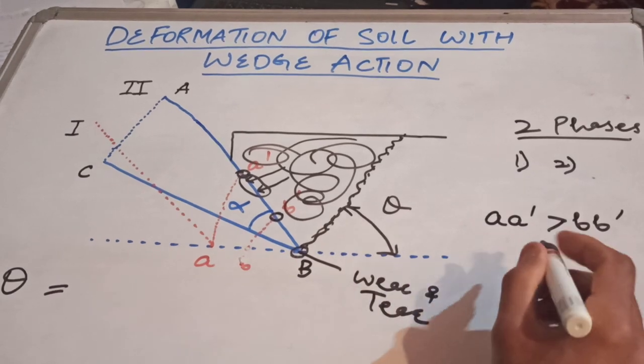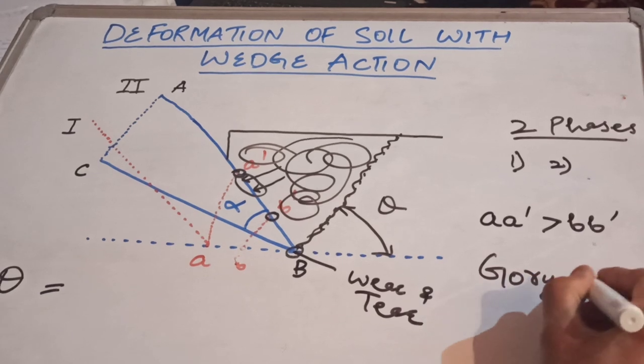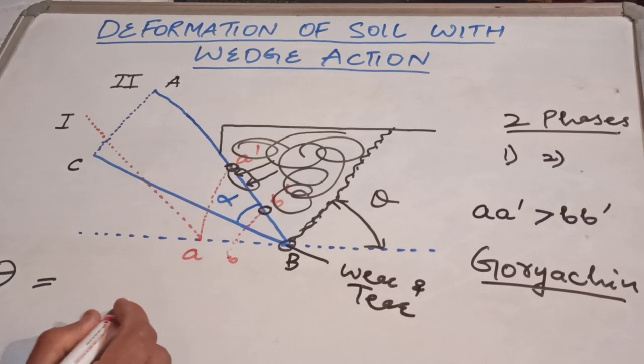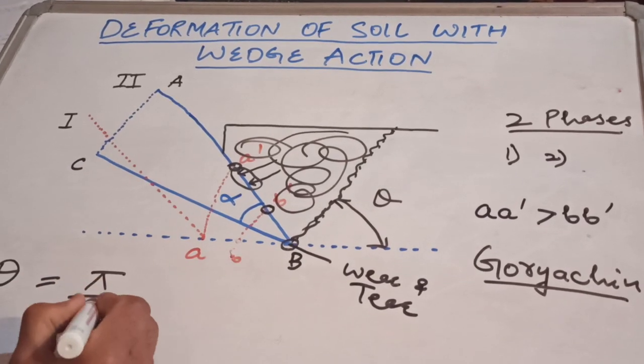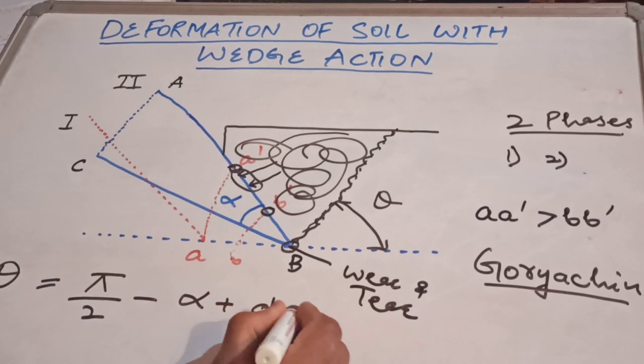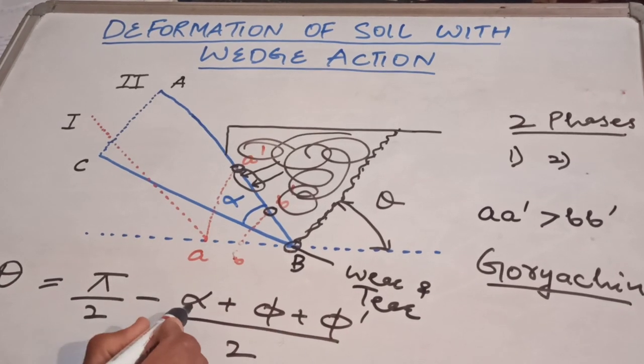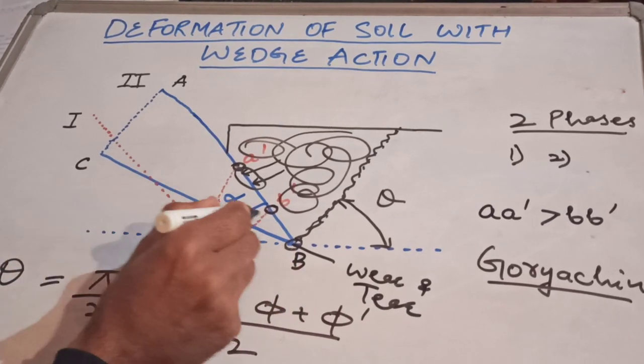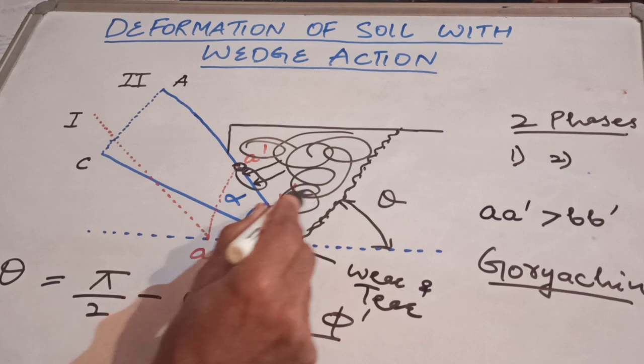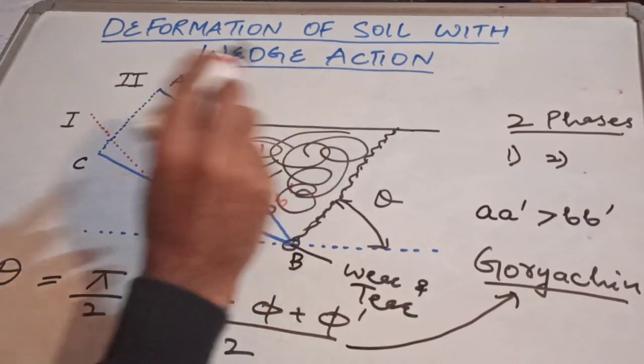This angle theta was calculated by a scientist, his name is Goryachin, G-O-R-Y-A-C-H-I-N. That's why this formula is called the Goryachin formula. It is equal to pi by 2 minus alpha plus phi plus phi dash, divided by 2. Where alpha is tool lift angle, phi is internal friction of the soil, and phi dash is friction between the metal and the soil. This usually happens in normal soils.